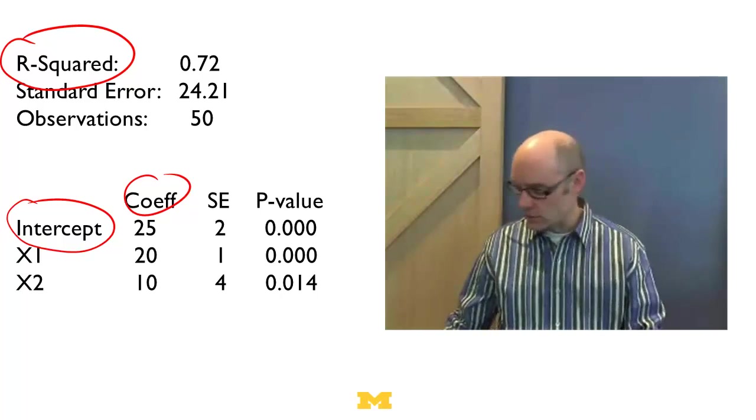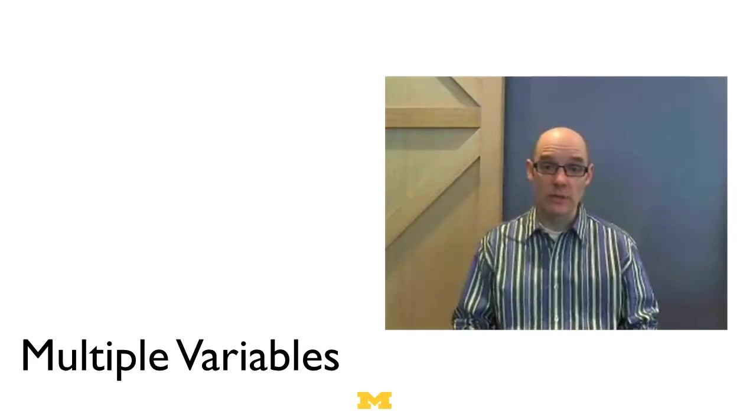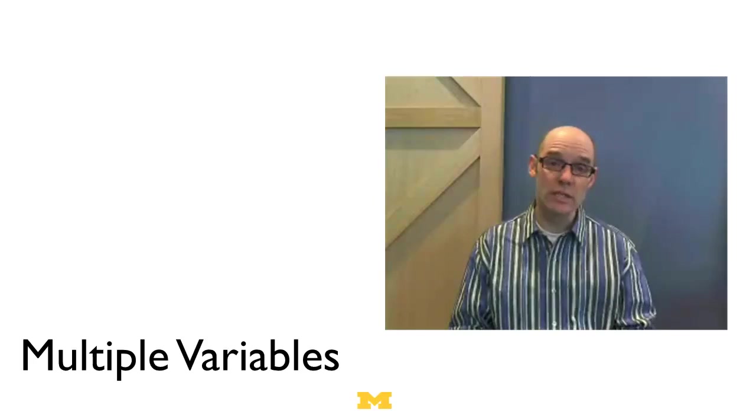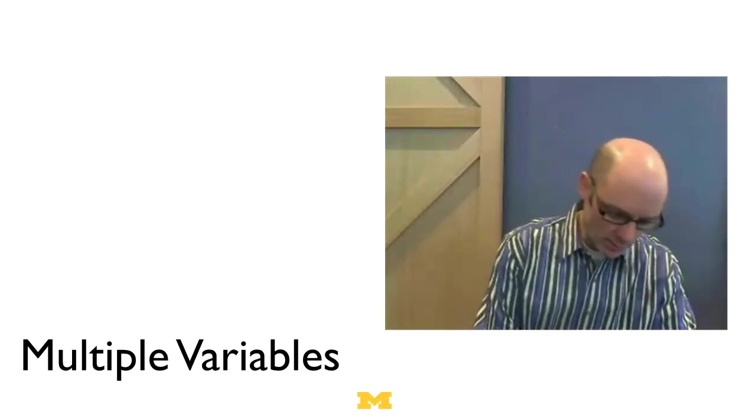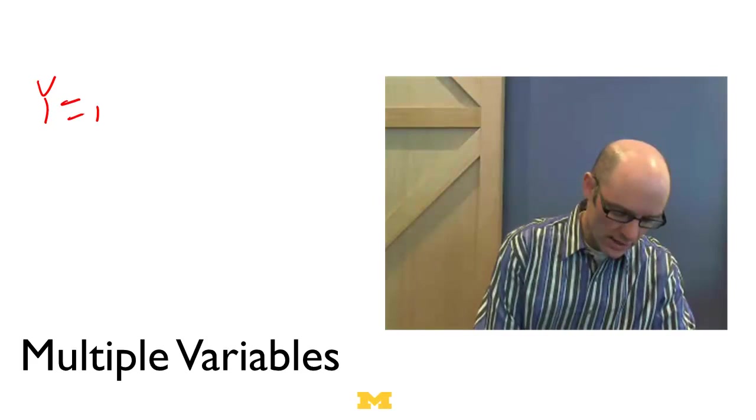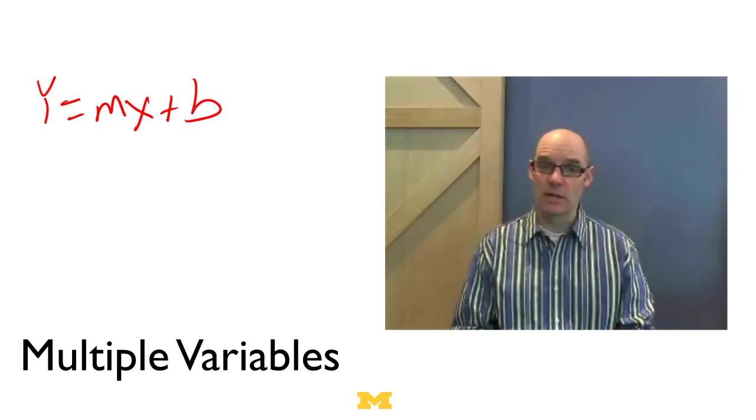So the first thing to note is we've got to think about what's really going on. When we see regression output, what it really is, is it's a linear model, but it's a linear model based on multiple variables. So remember before we had y equals mx plus b, right? That was our model.